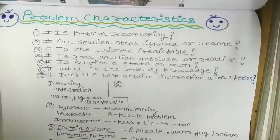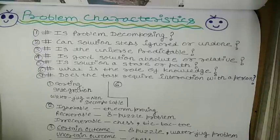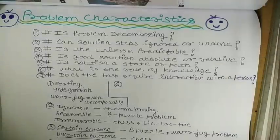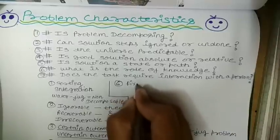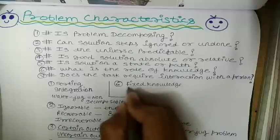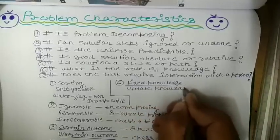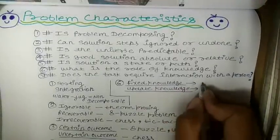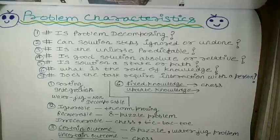The sixth characteristic is: what is the role of knowledge? In a longer form: is a large amount of knowledge absolutely required to solve the problem, or is knowledge important only to constrain the search? We have two types: fixed knowledge and updated knowledge. In fixed knowledge, knowledge is fixed and we can't change it. Example: in games like chess, everything is already specified and we play using rules that are already fixed.